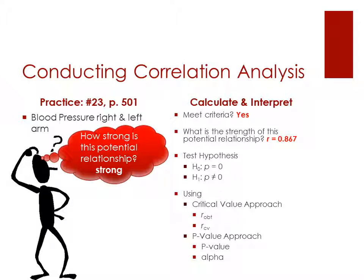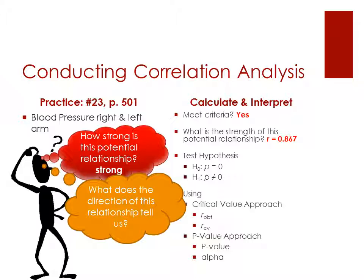So it's a strong relationship, 0.867, that's a really good one. So if we're looking at that alone, when we're looking at this, what does this tell us about the direction of the relationship as well? So we've got 0.867, that's strong, and what direction does it go?